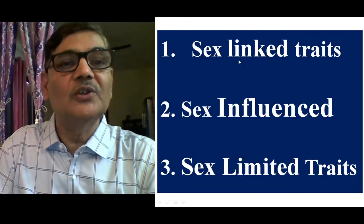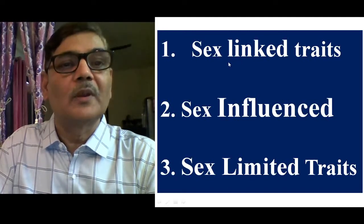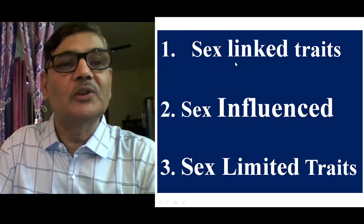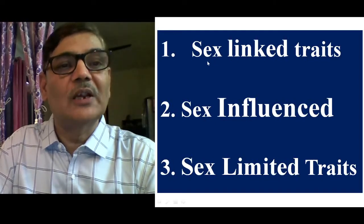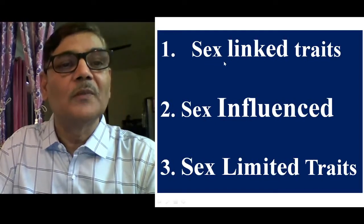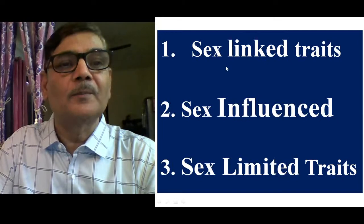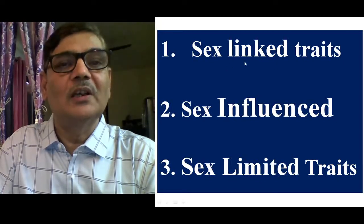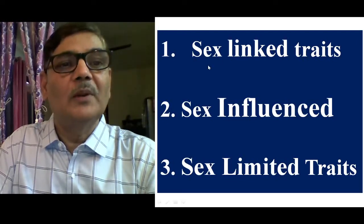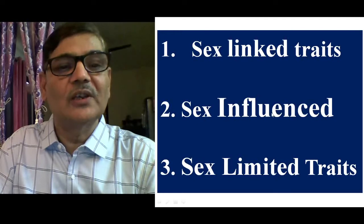Such genes follow a specific pattern of inheritance that differs depending on whether the female is homozygous or heterozygous for a specific allele. We very well know the examples of hemophilia, red-green color blindness, and Duchenne muscular dystrophy — these are some examples of sex-linked characters. But we are mainly concerned here with sex-influenced and sex-limited traits, so let us understand what these two are.